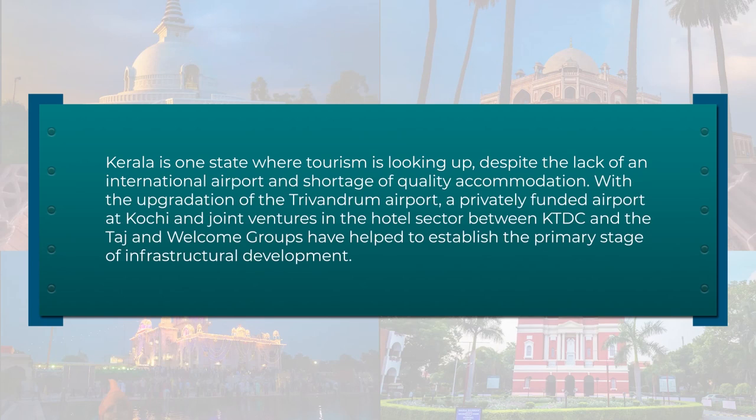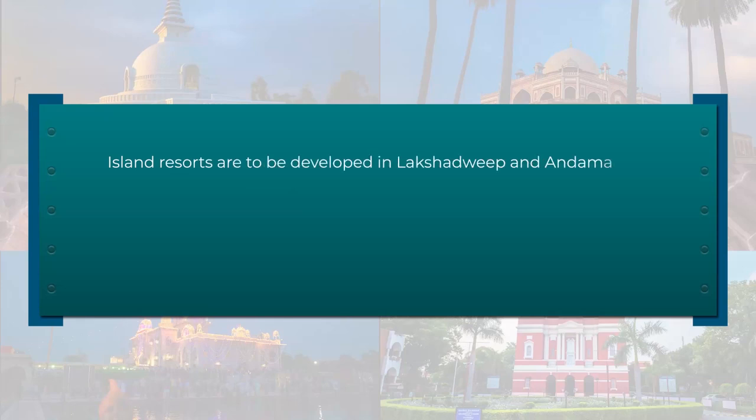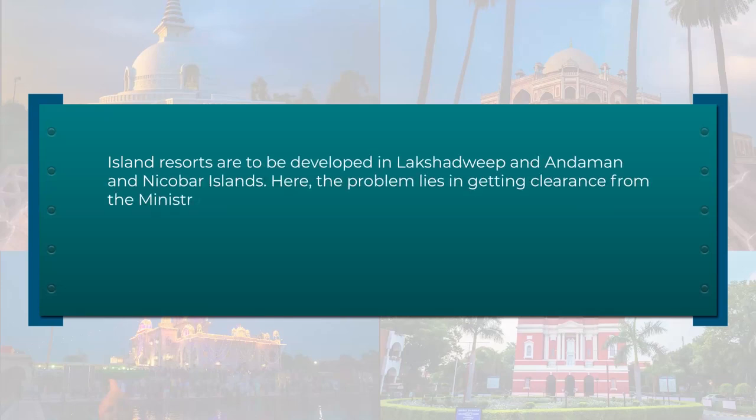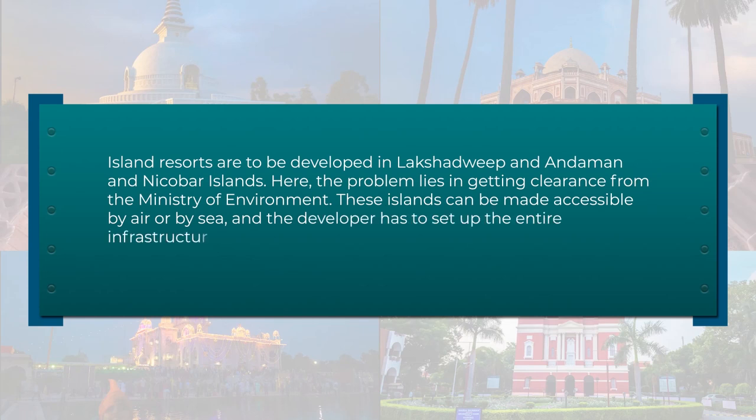Kerala is one state where tourism is looking up, with the accreditation of the Thiruvananthapuram airport, a privately funded airport at Kochi, and joint ventures in the hotel sector between Kerala Tourism Development Corporation and the Taj Group of Hotels and Welcome Group. These have helped establish the primary stage of infrastructure development in the state. The success of tourism will ultimately depend on planned growth of infrastructure; however, given the resource crunch, selective development should be done to ensure effective and sustained development of destinations.